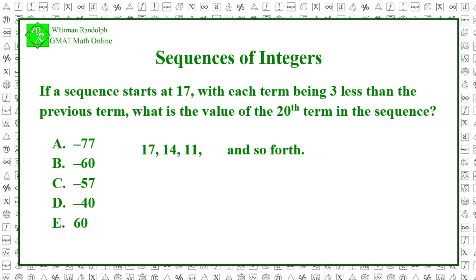The 20th term will be 19 terms after the first term. So it will be 19 times 3, which equals 57, less than the first term. That is, we obtain the 20th term by subtracting 57 from 17. This gives us 17 minus 57, which equals minus 40.